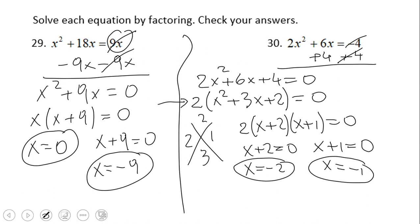The numbers 6 and 4 have a common factor of 2, and then I used the diamond problem for factoring the second trinomial.